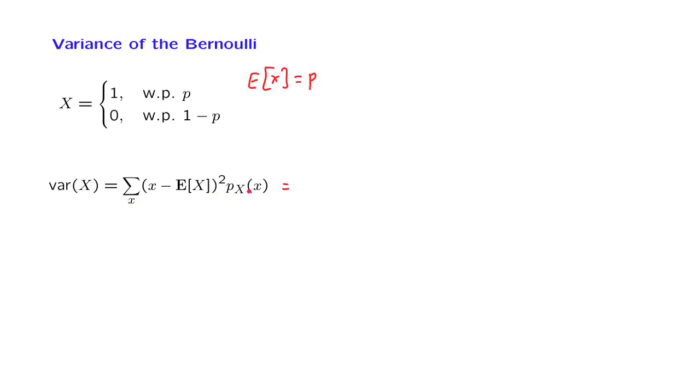The contribution when X is equal to 1 is (1 minus the expected value, which is p) squared, and the value of 1 is taken with probability p. There's another contribution to this sum when little x is equal to 0, and that contribution is going to be (0 minus p) squared times the probability of a 0, which is 1 minus p.